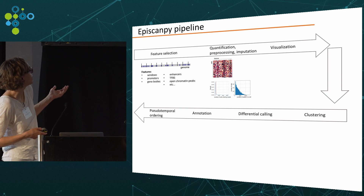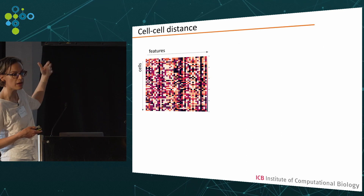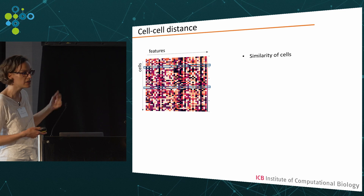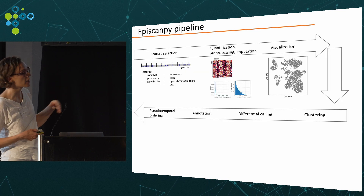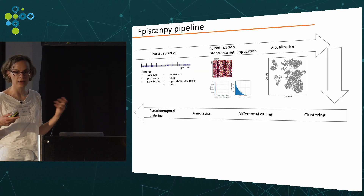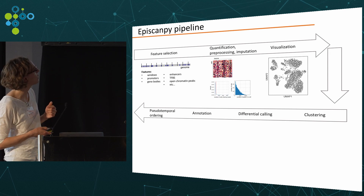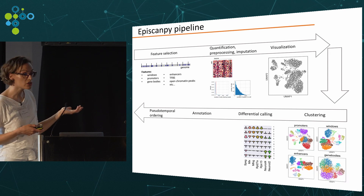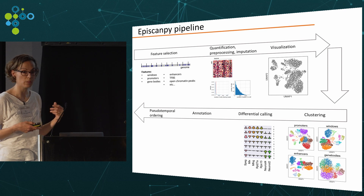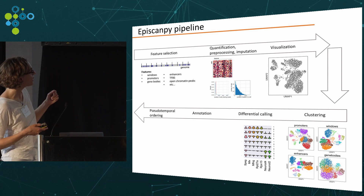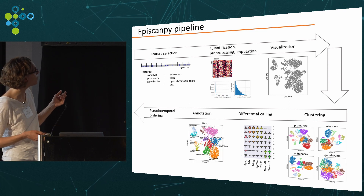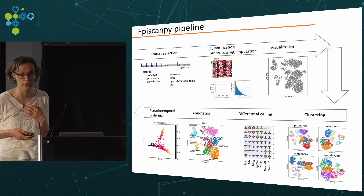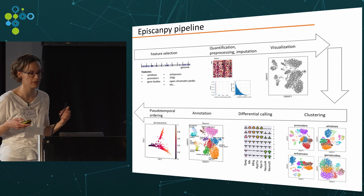Once we have the quantified features, we calculate the similarity between any two cells based on some distance metric. Based on that, we can do all the standard downstream analysis: low dimensional visualization, clustering, differential calling based on DNA methylation or open chromatin — which allows us to annotate the different clusters — and we can also do pseudo-temporal ordering if we have the correct dataset.